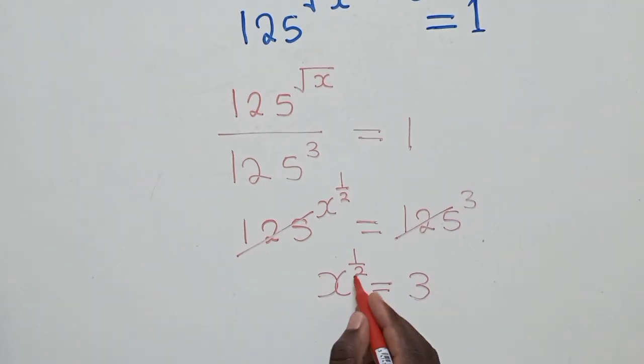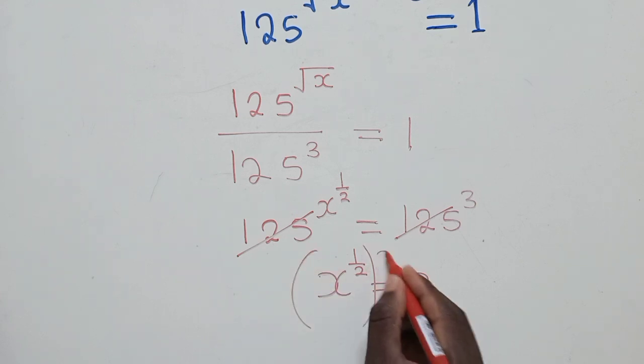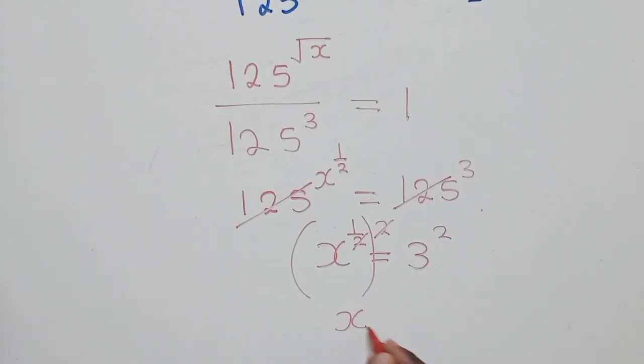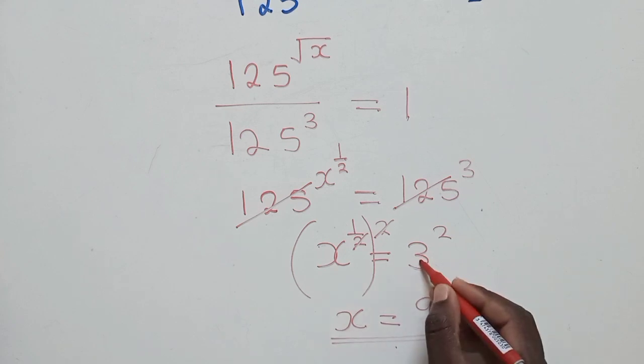So lastly, to get rid of this power, you raise to the power 2 here and power 2. This 2 and 2 will cancel. We remain with x is equal to 9 because 3 to the power 2 is equal to 9.